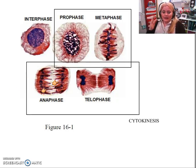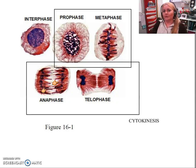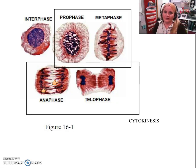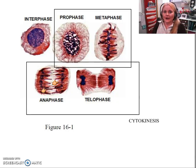Mitosis makes a clone of the original cell — the same exact copy of each chromosome. That's important when we start to talk about meiosis, where we're not dealing with clones anymore. We're dealing with totally new types of cells that have been recombined and reconfigured, which gives us diversity within a population.